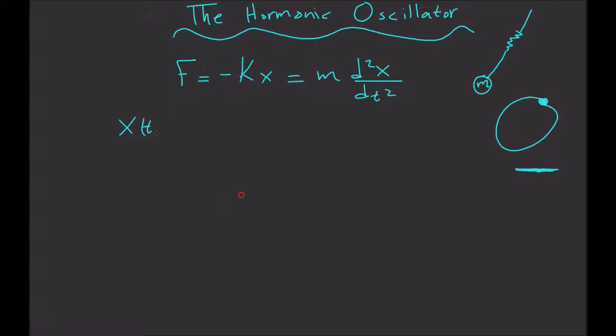We know the solution is x(t) equals some constant A times the sine of square root of k divided by m times time, plus some constant B times the cosine of square root of k divided by mass times time.